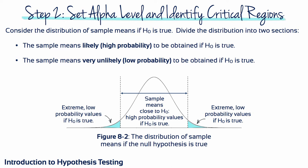To visualize this, let's consider the distribution of sample means if the null hypothesis is true, and divide this distribution into two sections. The middle section represents all the sample means that are very likely to be obtained if the null hypothesis is true, whereas the two smaller tails represent the sample means that are very unlikely to be obtained if the null hypothesis is true.